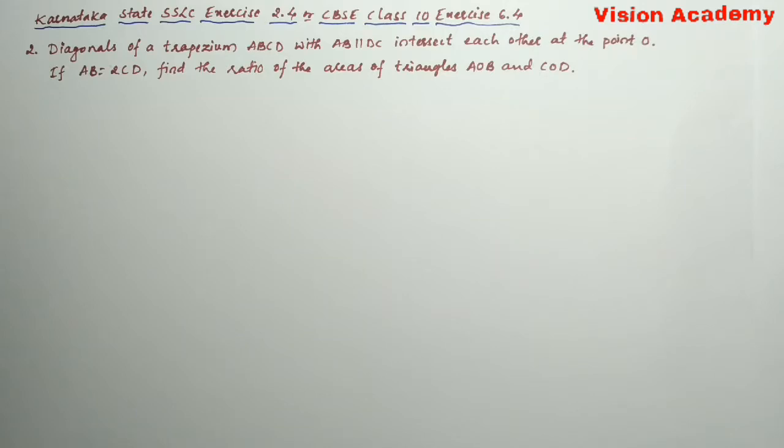Question number two. Diagonals of a trapezium ABCD with AB parallel to DC intersect each other at the point O. If AB is equal to 2CD, find the ratio of the areas of triangles AOB and COD.